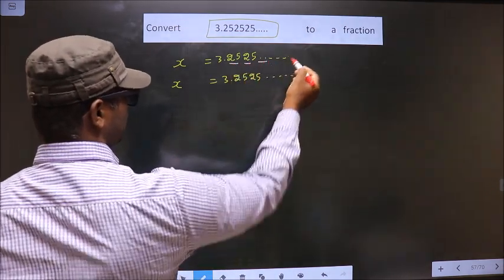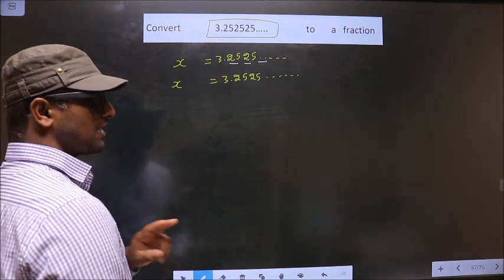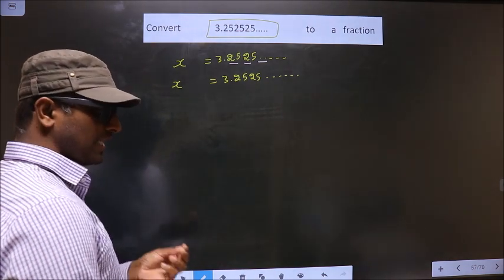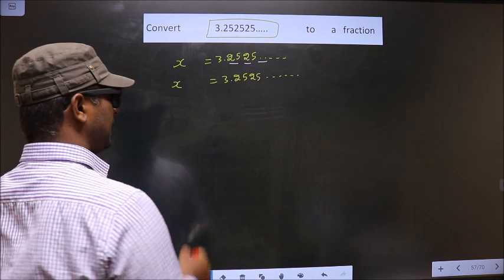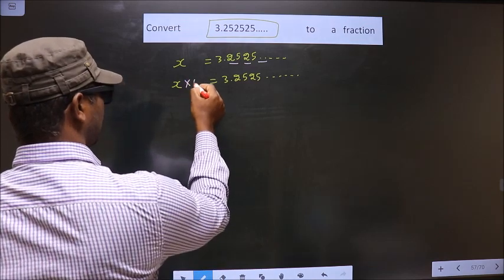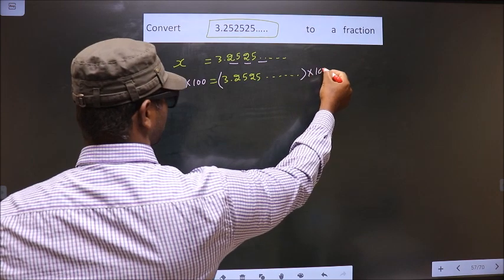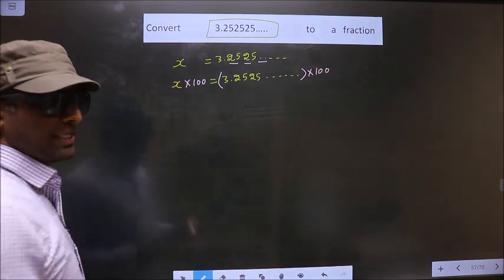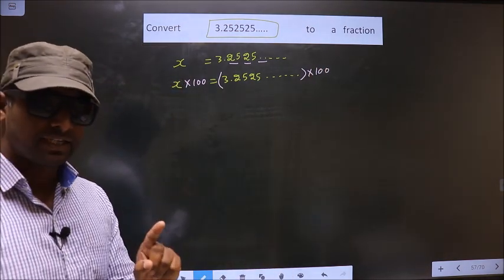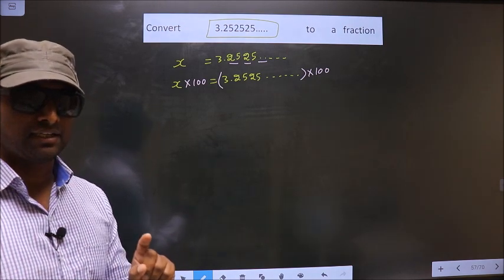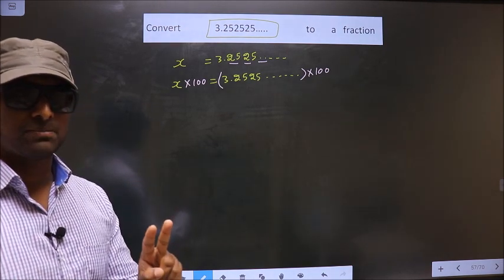Whenever two numbers are being repeated, you should multiply by 100 on both sides. I repeat: whenever one number is being repeated, you should multiply by 10. Had it been two numbers being repeated, multiply by 100.